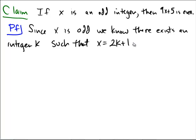That's the definition of being an odd integer. Then notice what happens when we take 9x plus 5. Well, 9x plus 5 is equal to 9 times 2k plus 1 plus 5 by substitution.